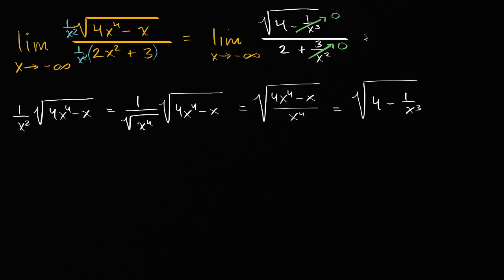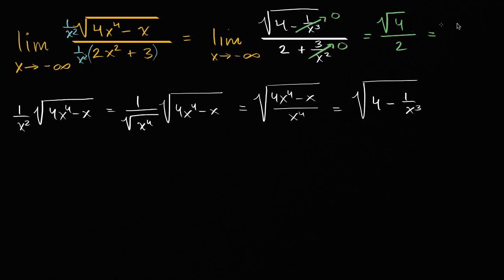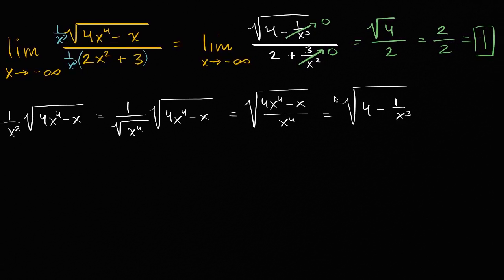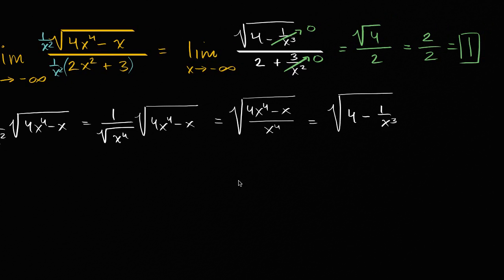So what this results in is the square root of four — the principal root of four — over two, which is the same thing as two over two, which is equal to one. And we are done.